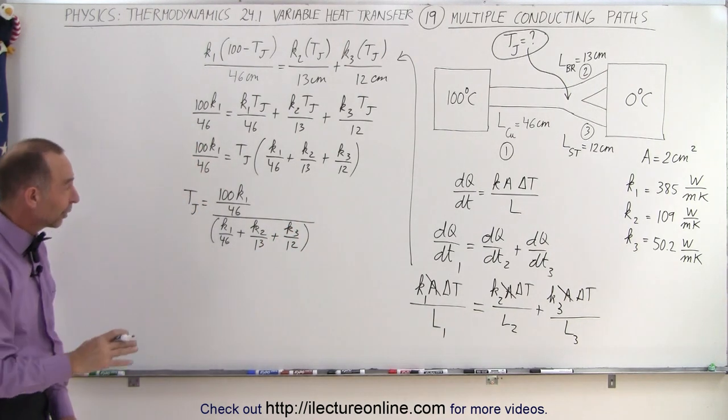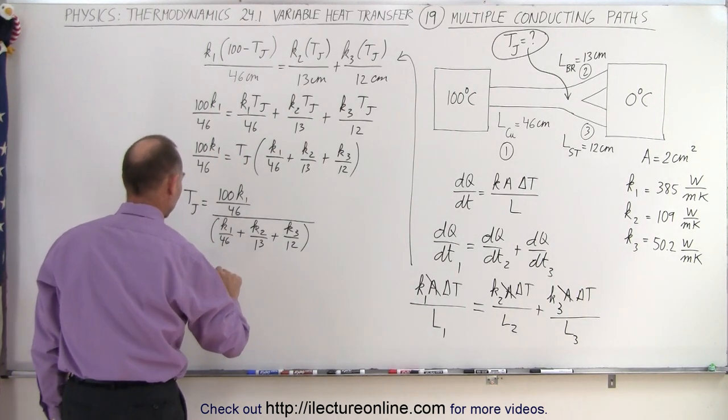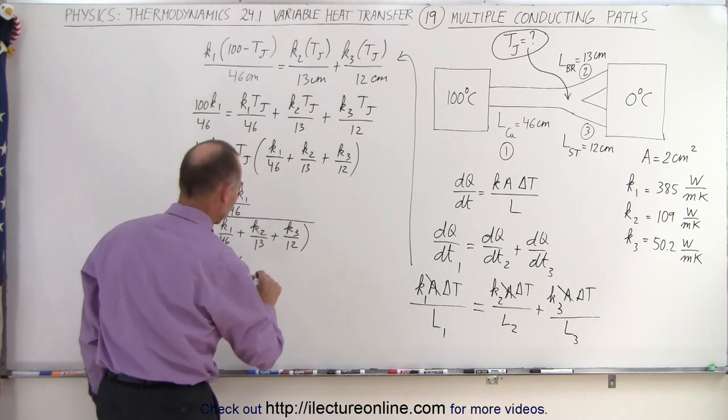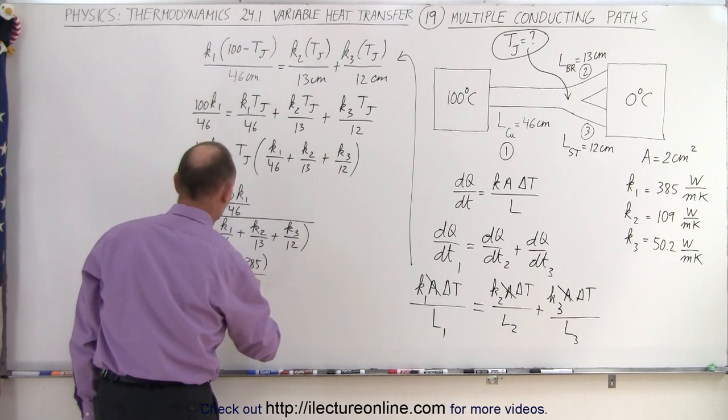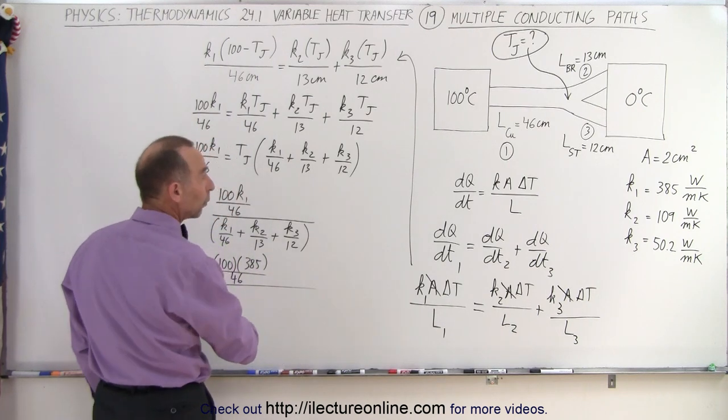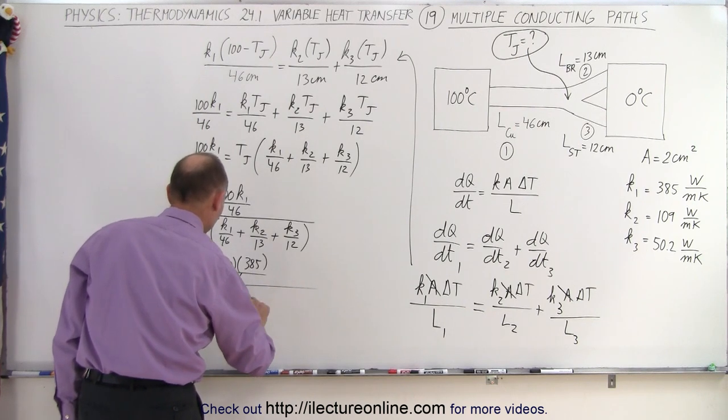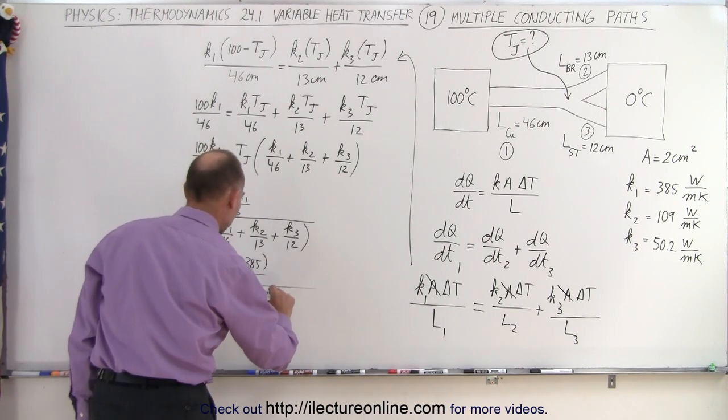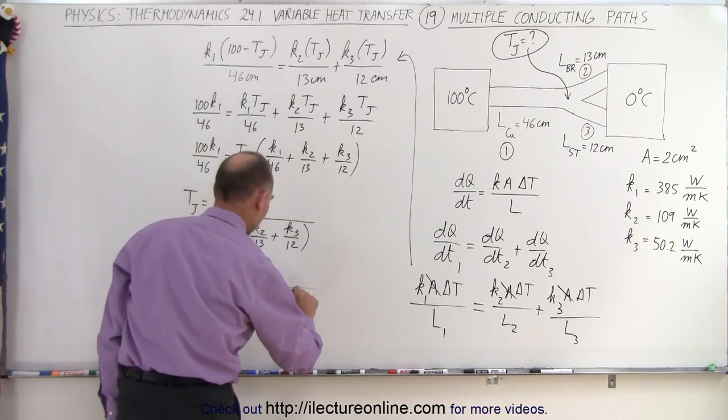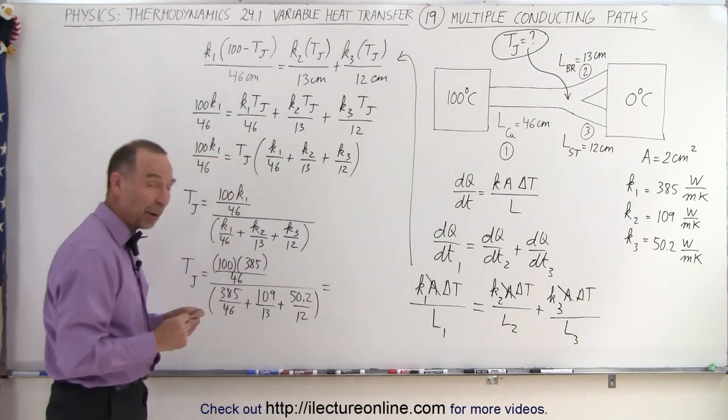Now we're ready to plug in the values. The junction temperature equals 100 times K1, which is 385, divided by 46, all divided by the quantity: 385 divided by 46 plus K2, which is 109, divided by 13, plus K3, which is 50.2, divided by 12.